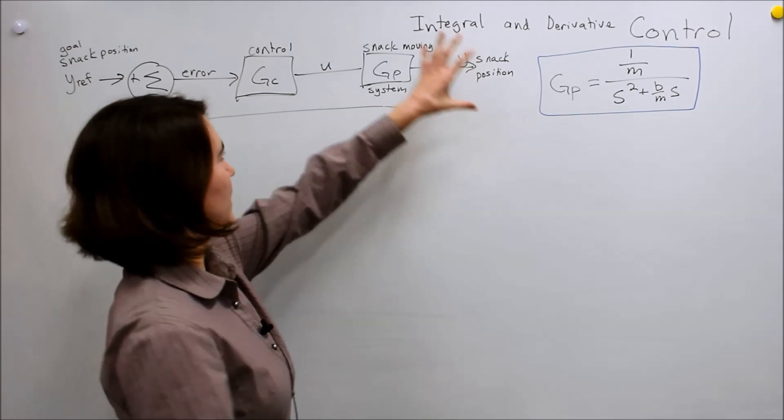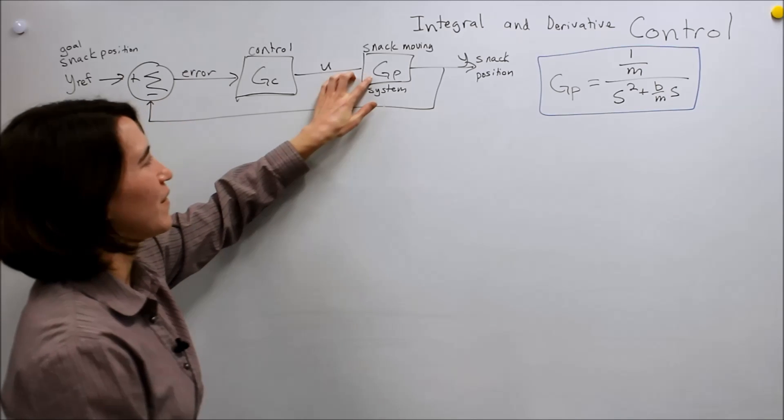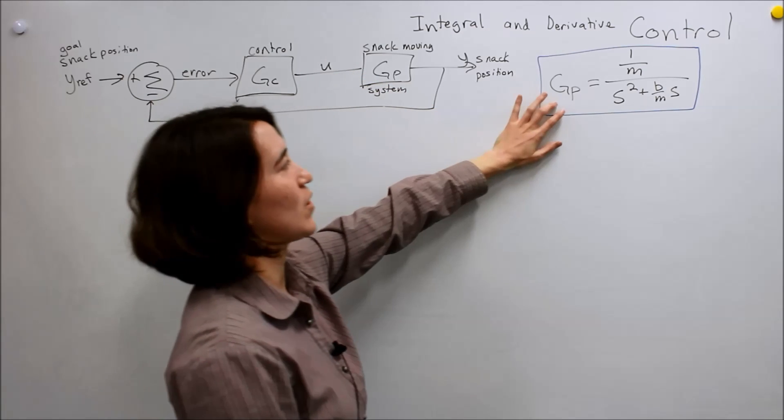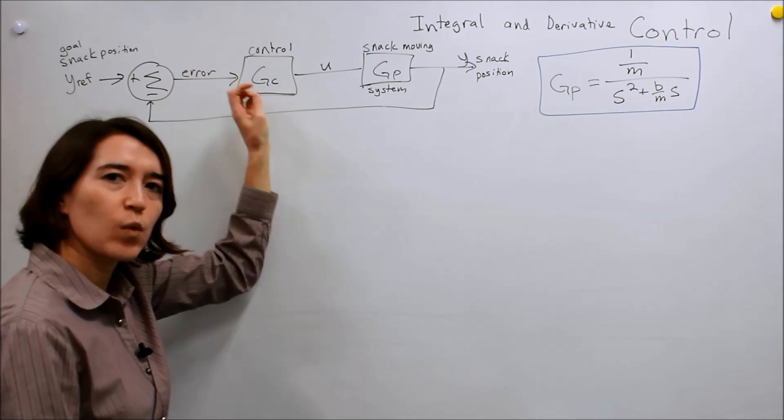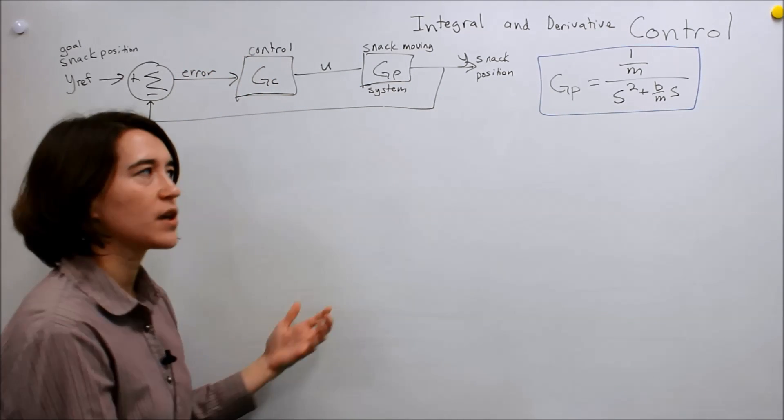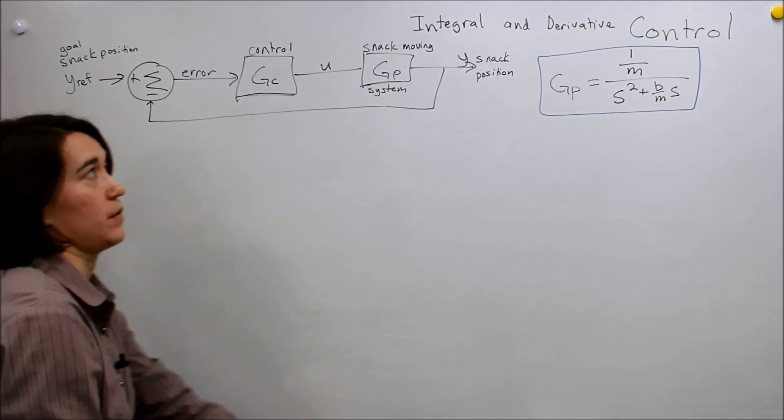This could be any system, but this is our system that we modeled. We found a value for a transfer function for the plant, and now we did one control, proportional, but I want to introduce two other basic controls, and they're called integral and derivative.